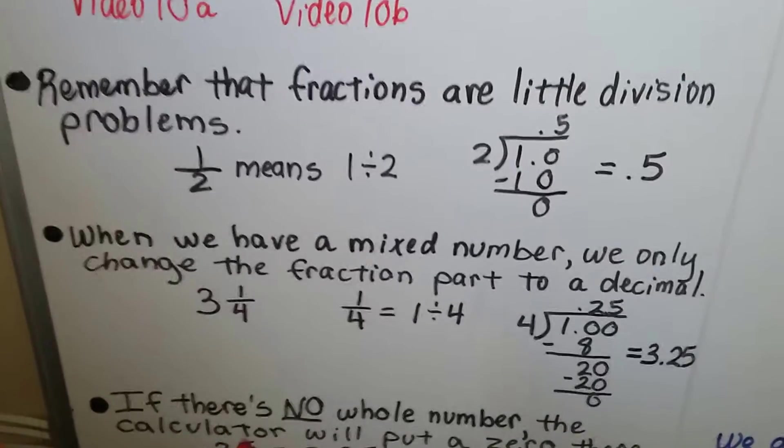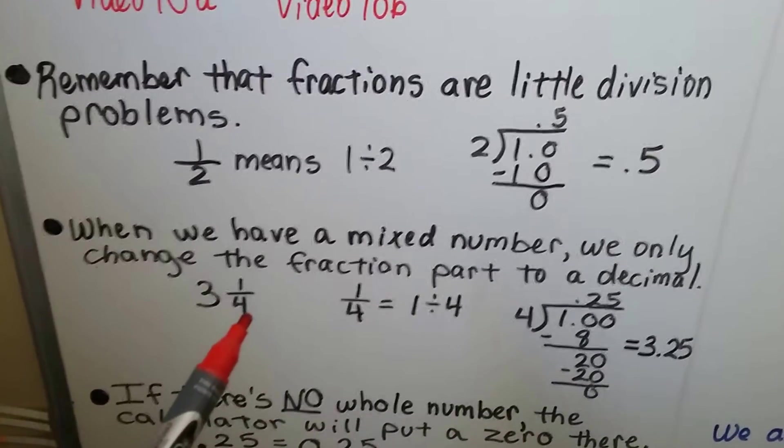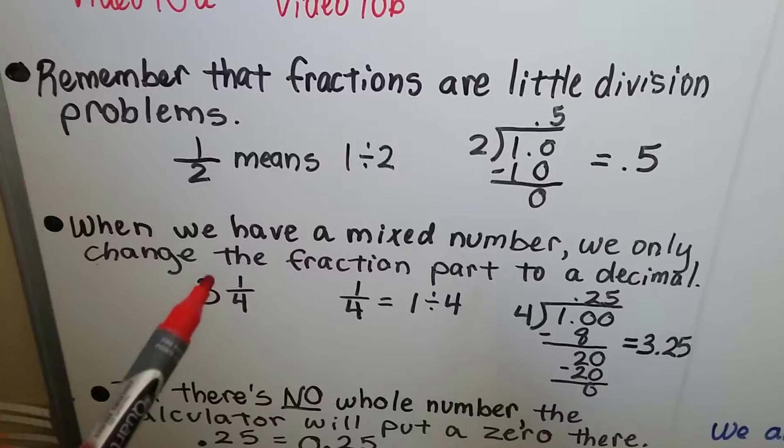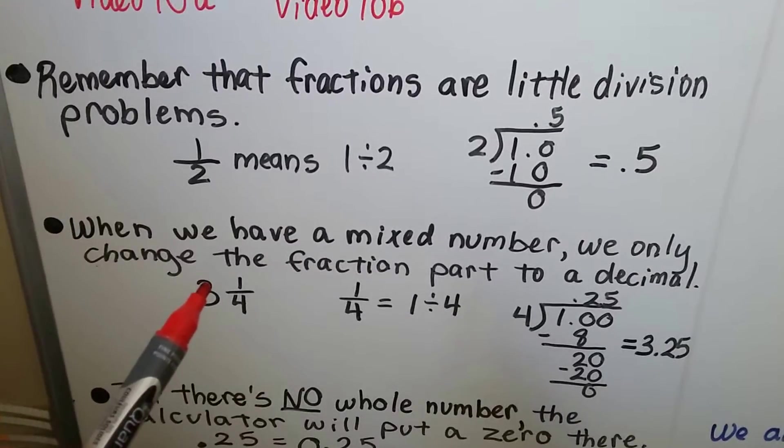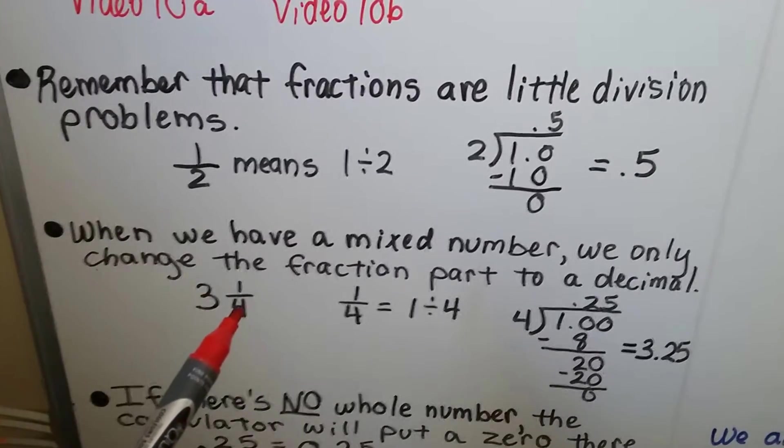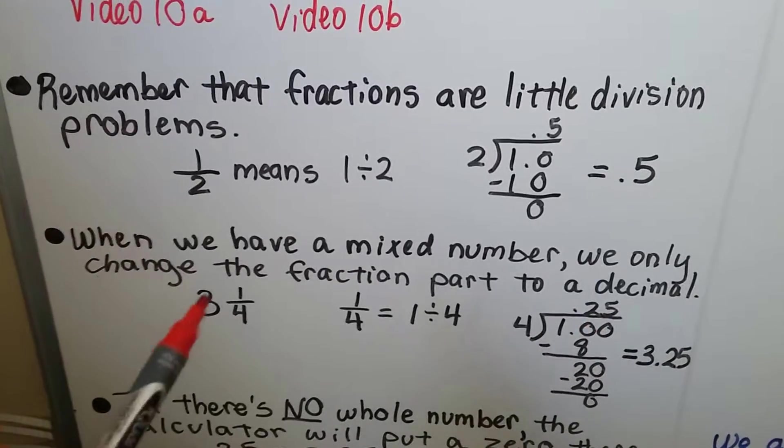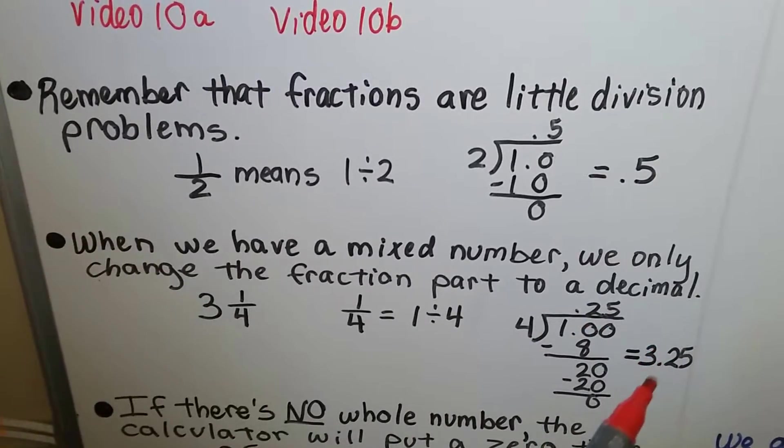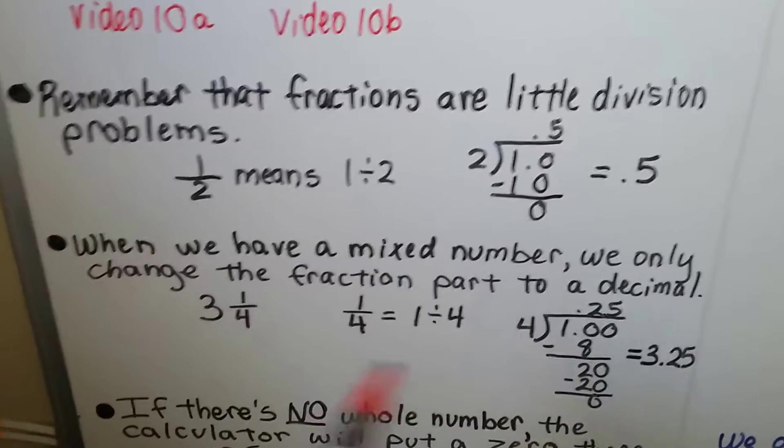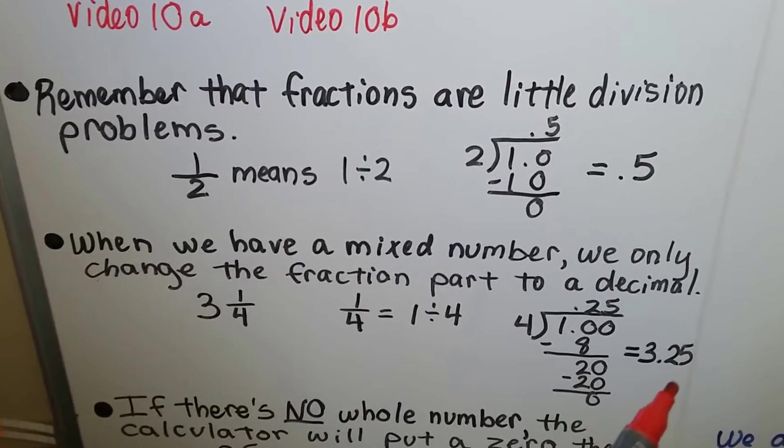When we have a mixed number, we only change the fraction part to a decimal, because this is going to be on the other side of the decimal point. We just worry about the 1 divided by 4, which comes out to a 0.25, but we have to remember to put that 3 back onto the front of it. It's 3 and 1 fourth, so it's 3.25.